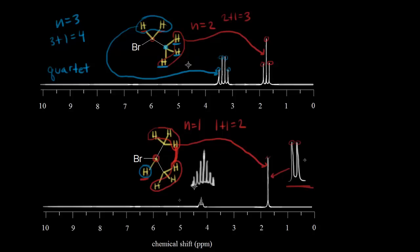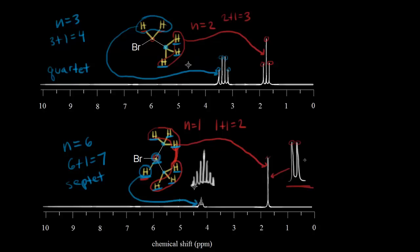What about the blue proton? How many neighbors does the blue proton have? We look at the carbon next door — one, two, three. This carbon is also next door, so one, two, three more. A total of six neighbors. So n is equal to six. We expect n plus one peaks: six plus one is equal to seven. So we would expect seven peaks, called a septet. Looking at the signal, we count one, two, three, four, five, six, and seven peaks.